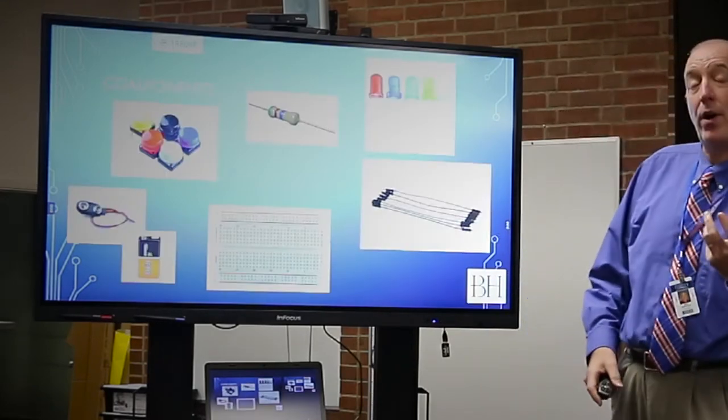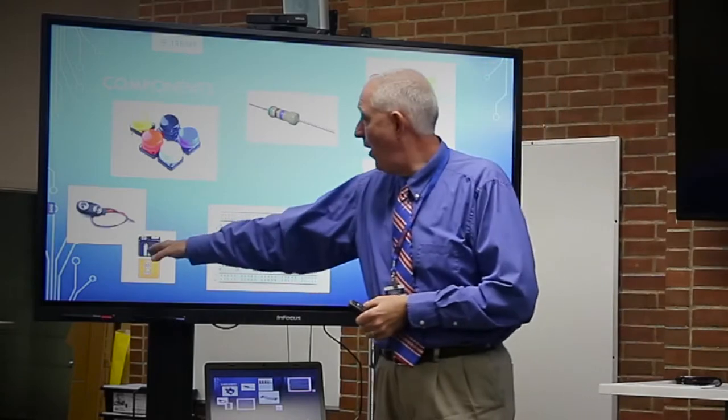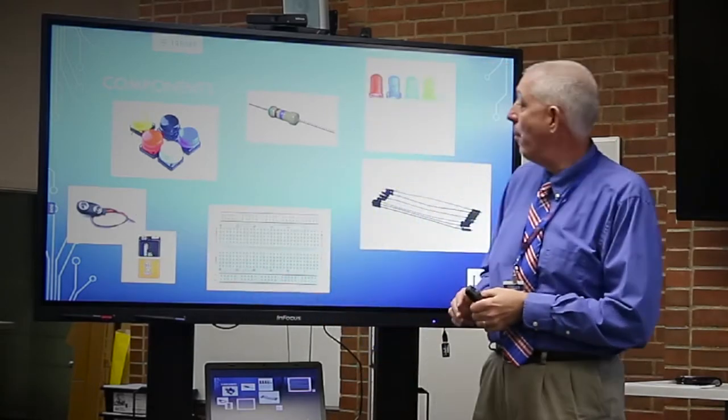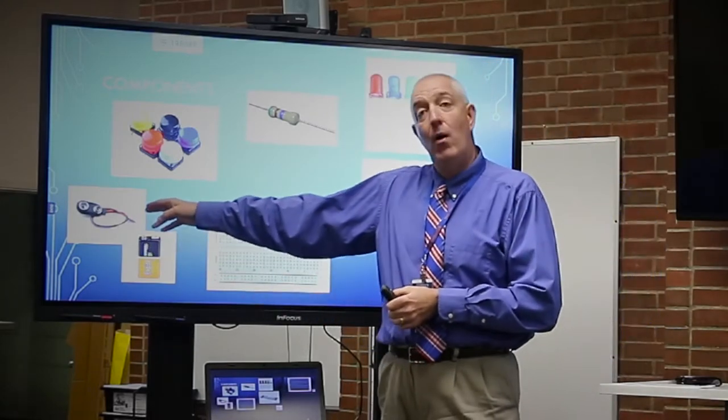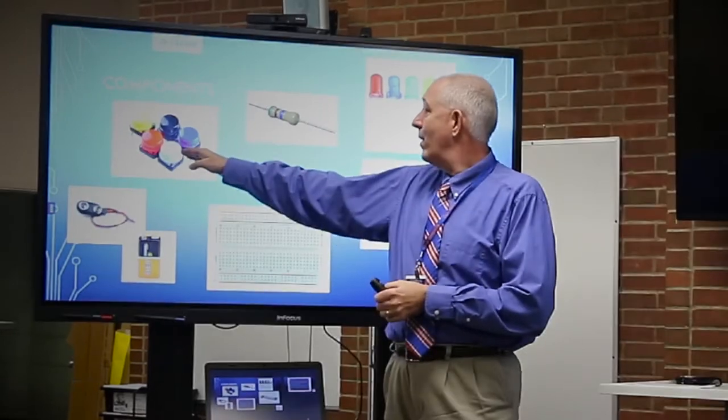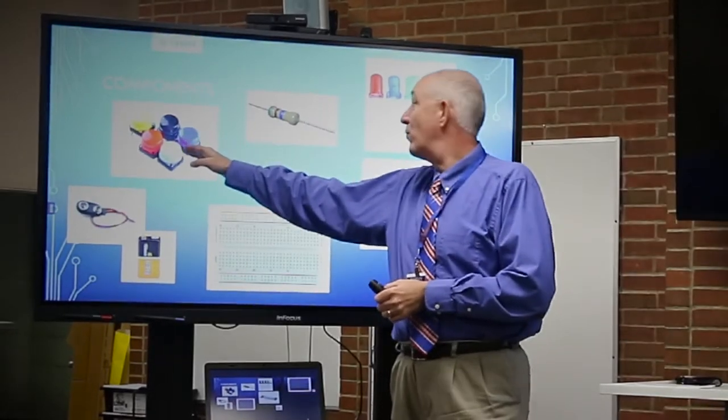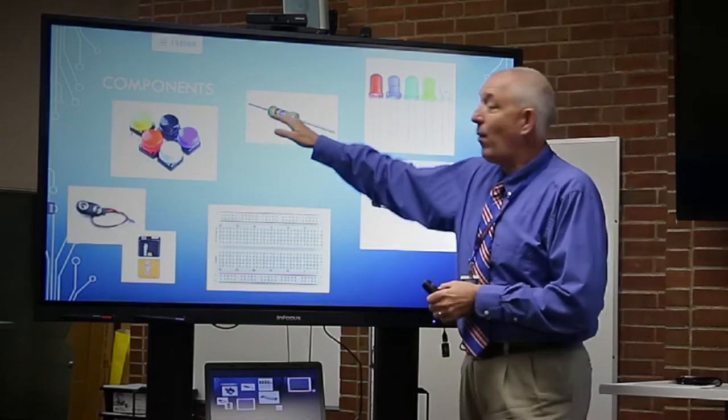The components we're going to use in our demonstration today start with a battery and a way of hooking it up. So we have a nine volt battery, way of hooking it up. We're going to use a momentary push button switch. Then we need this little doohickey right here. It's called a resistor.